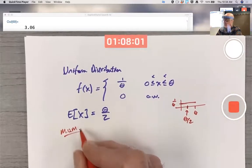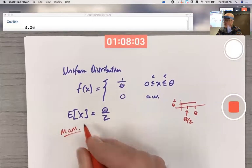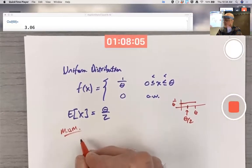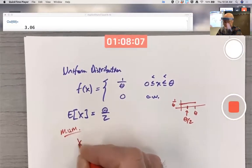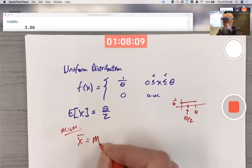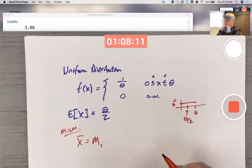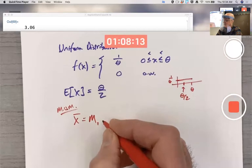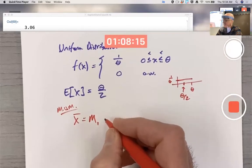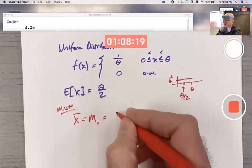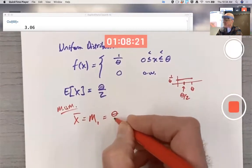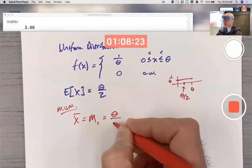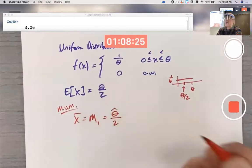Method of moments is to replace the theoretical expectation of X with X bar itself, a statistic, or if you prefer M1, the first moment, first statistical moment. And replace theta with its estimator. I haven't called it theta hat until the very end, but you could go ahead and use the hat to begin with.